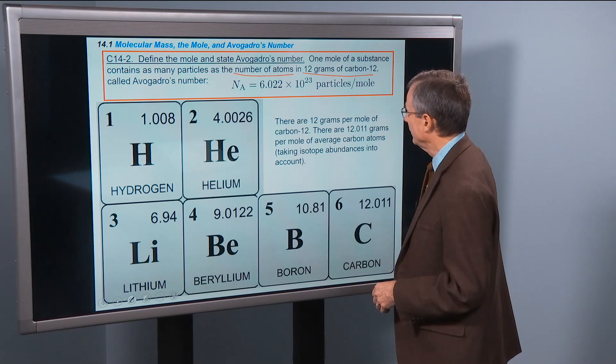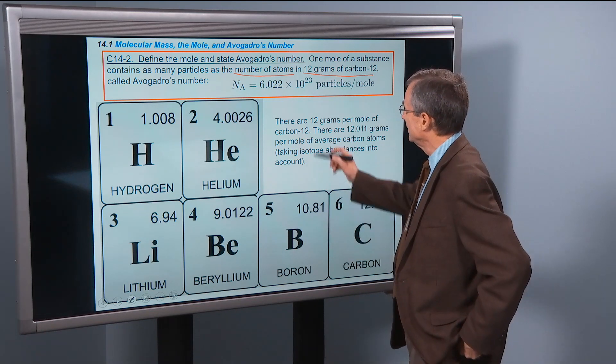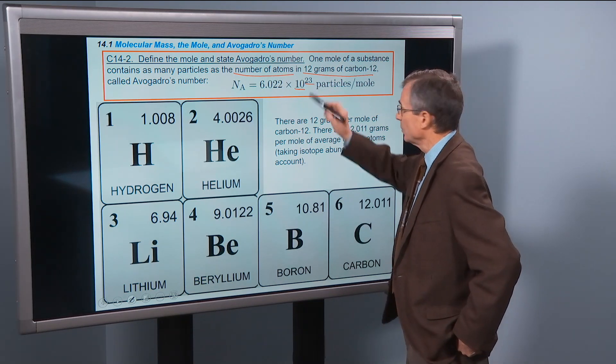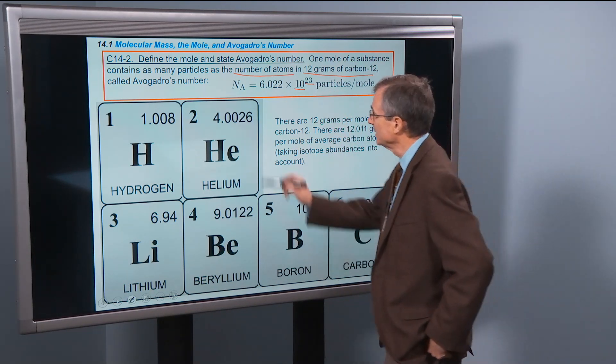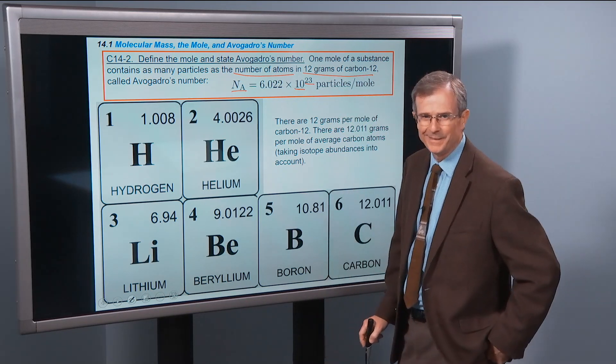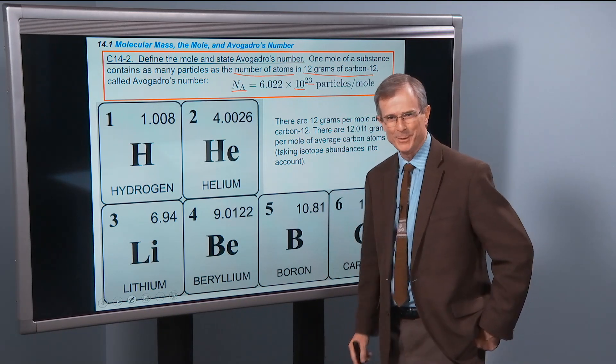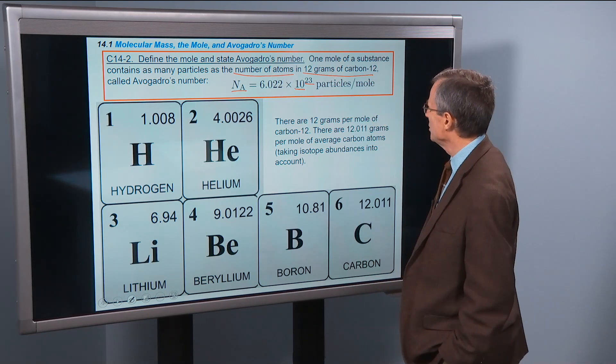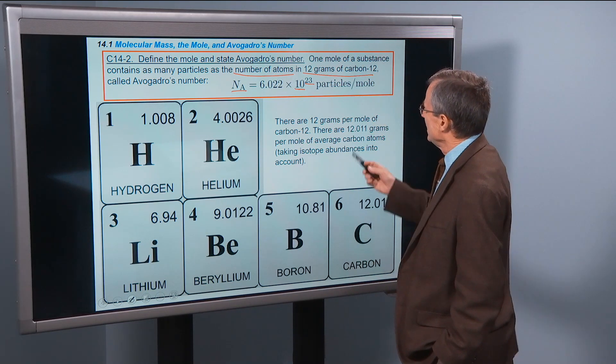If you want a way to remember that, my wife's birthday is on the 10th month, October, the 23rd day of October, and her name is Nadine, N-A-D-I-N-E. Just a way for you to remember her birthday or Avogadro's number, either one.